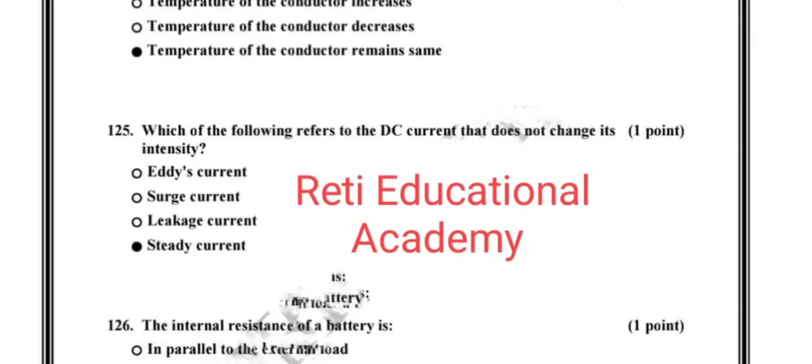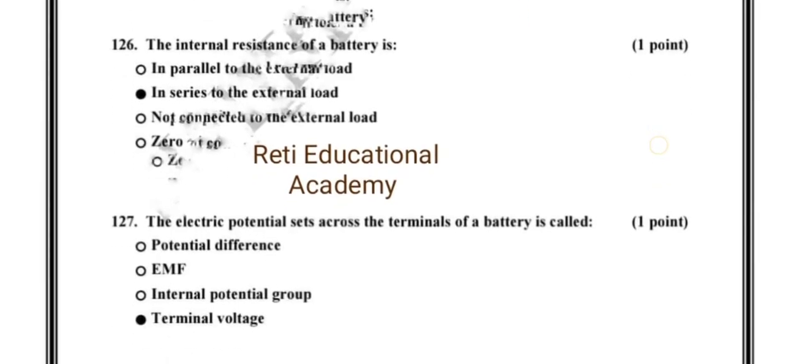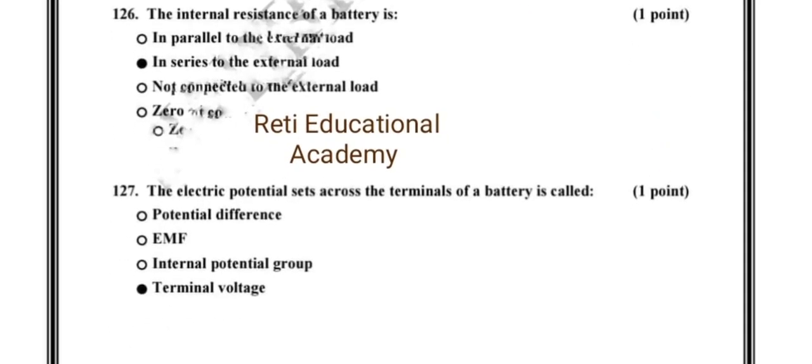Question number 126: The internal resistance of a battery is in series to the external load. Question number 127: The electric potential sets across the terminals of a battery is called, and the correct option is terminal voltage.